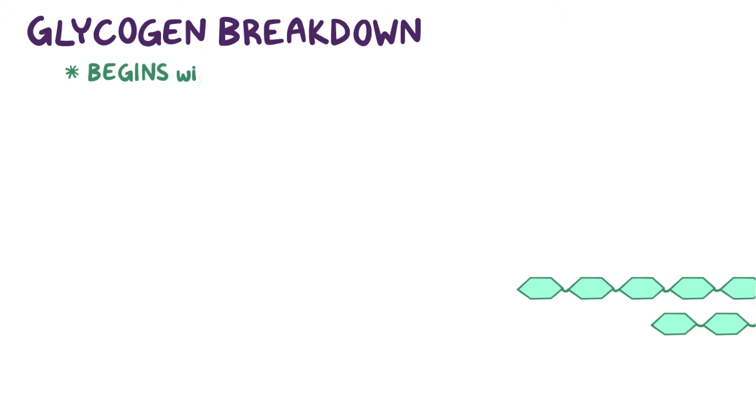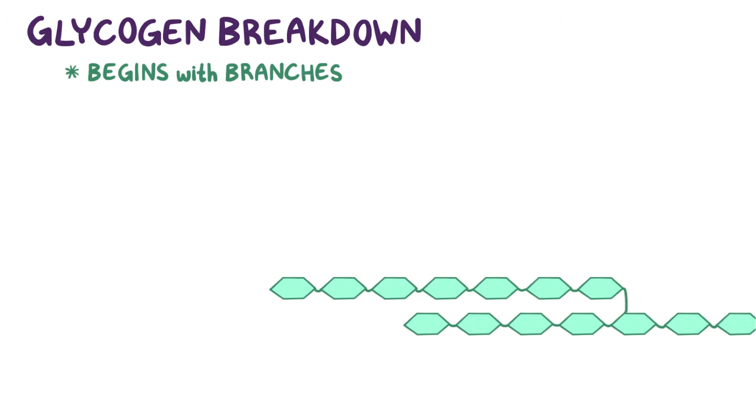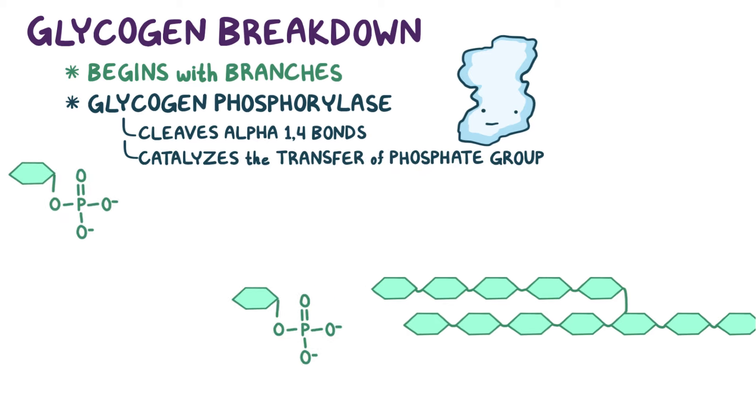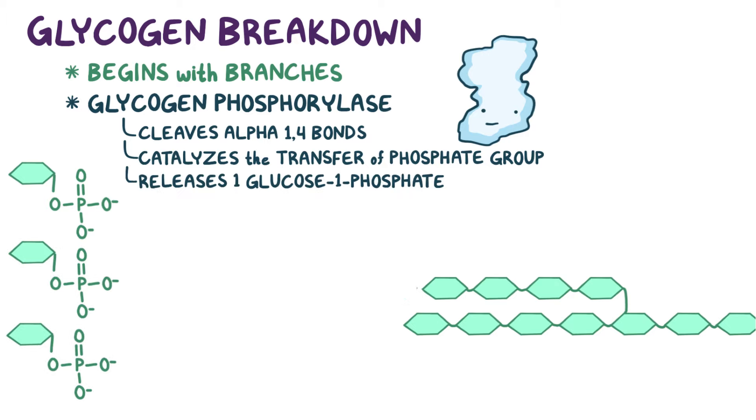In both the liver and skeletal muscle cells, glycogen breakdown starts with the branches. First, an enzyme called glycogen phosphorylase cleaves the alpha-1,4 bonds between individual glucose residues and catalyzes the transfer of a phosphate group to the freed glucose. The result is that the enzyme releases one glucose-1-phosphate molecule at a time. It keeps on doing this until exactly four glucose molecules remain on the branch.